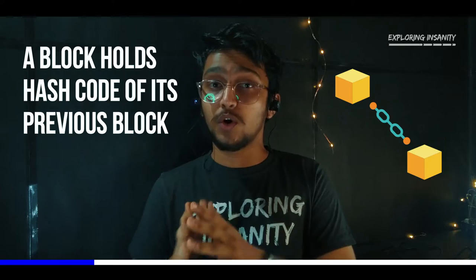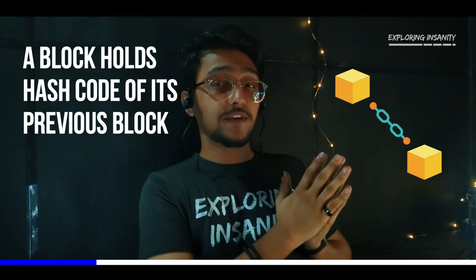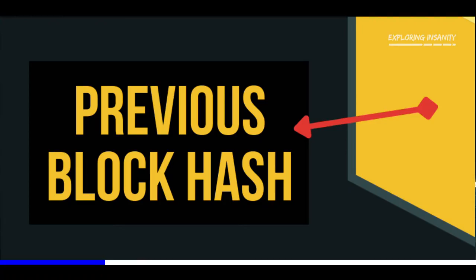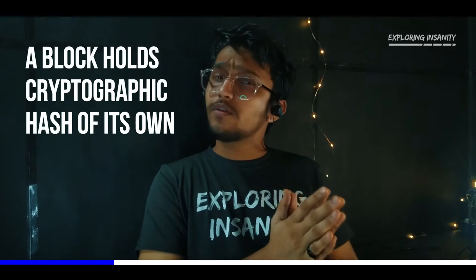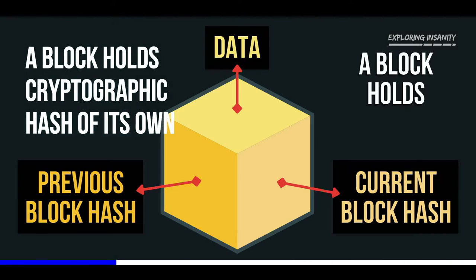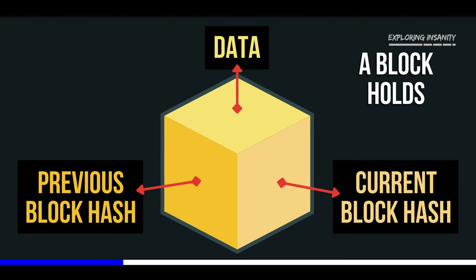A block also contains a cryptographic hash code of its previous block, and this effectively makes a chain of blocks — this is why it makes this technology more secure. Along with this, it contains a hash code of this block and its data. And every time there is a change in data, the hash code changes.